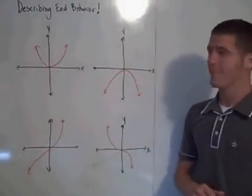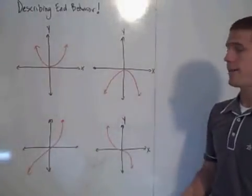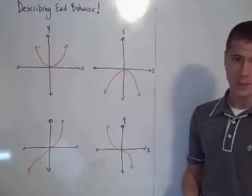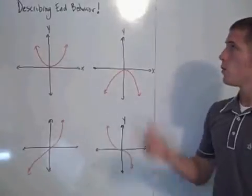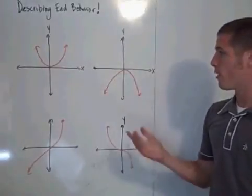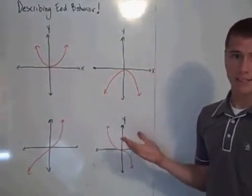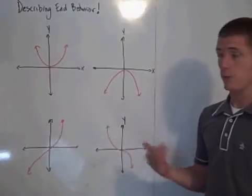This is for Cameron. This is for describing end behavior of polynomial functions. When you're describing the end behavior for a polynomial function, you have basically four options.